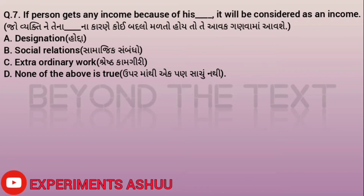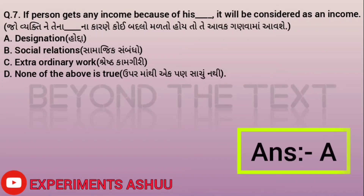Question seven: A person gets any income because of his blank, it will be considered as income. Options: A - designation, B - social relation, C - extraordinary work, D - none of the above. A person gets income because of their designation, just like a taxi driver or waiter gets tips. Income due to social relation or extraordinary work would not be considered income. So our answer is A, designation.